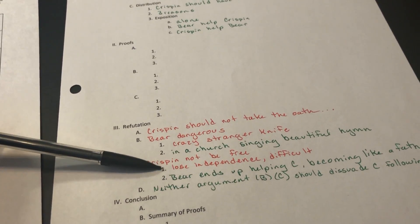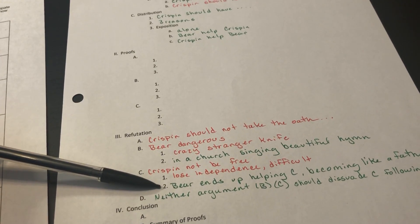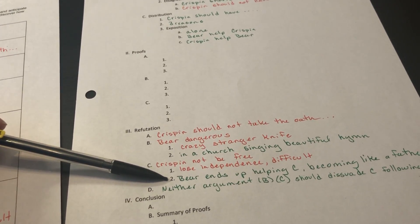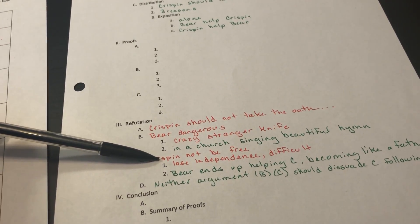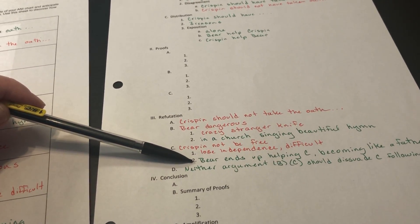So now we go to our second counter. Crispin would not be free. He would lose independence and life would become more difficult. Our counter to that: we're going to refute the second counter argument. Bear ends up helping Crispin, becoming like a father.